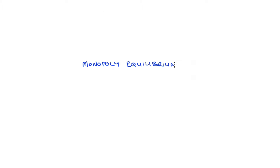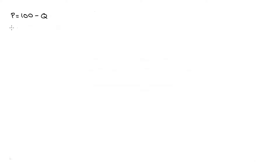Hi everyone. In this video I'm going to discuss market equilibrium and welfare analysis when we have a monopoly. The monopolist faces an inverse demand function P equals 100 minus Q, and the marginal cost of production is MC equals 40 plus 2 times Q. The plan is to find and draw the monopolist's equilibrium price and quantity, and then do a welfare analysis. Chapters are marked throughout, so check the description for timestamps.